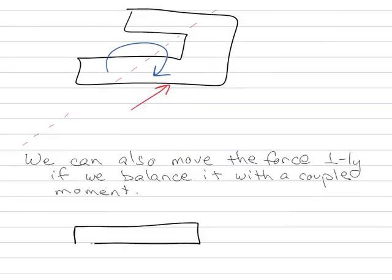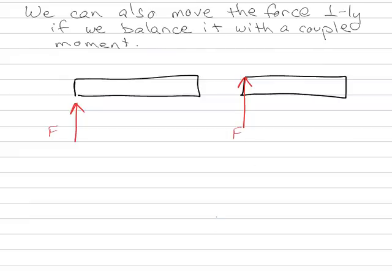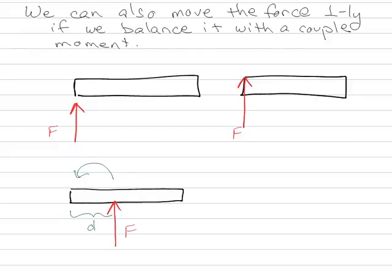If I have a force here and I want to move it, I can move the force along the line of action and there's no change — it's just the same. But if I move the force perpendicularly, say a distance D, what's happened is now I'm trying to make it rotate in a way it wouldn't before. To accommodate that, I have to create a moment of magnitude F times D to make up for the fact that I've moved it.